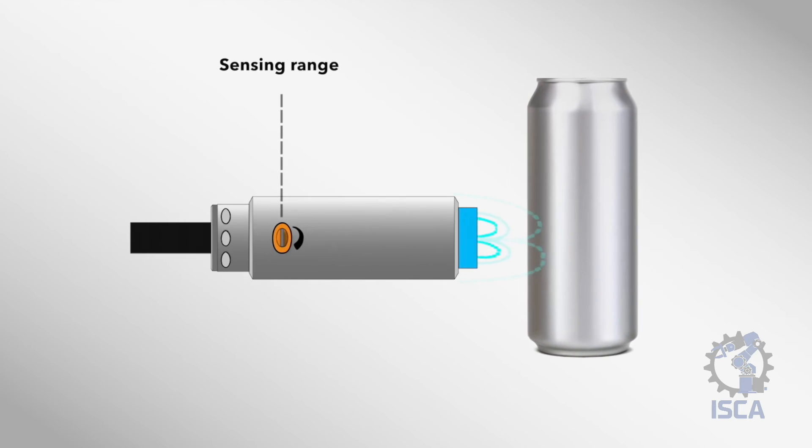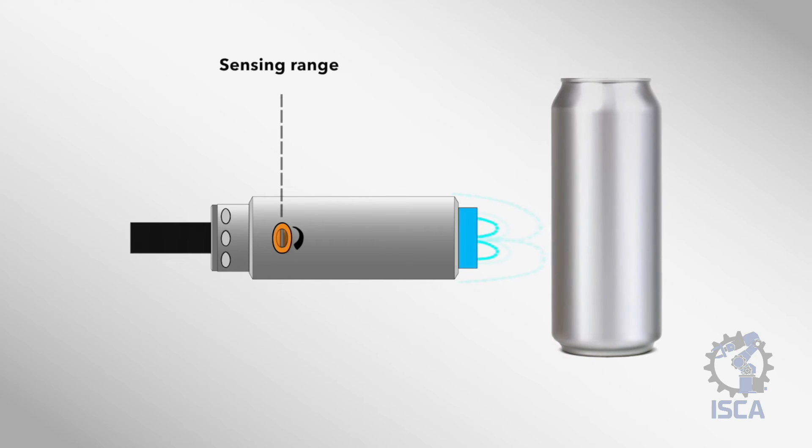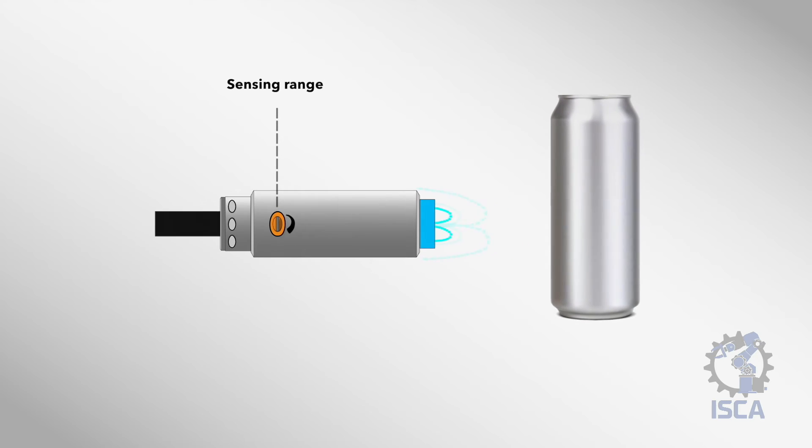Capacitive sensors have an adjustable sensing range. Turning the adjustment screw clockwise increases sensitivity, allowing detection at greater distances. Turning counterclockwise decreases sensitivity for only detecting targets at closer proximity. This tuning capability allows the detection threshold to be optimized for the particular application.